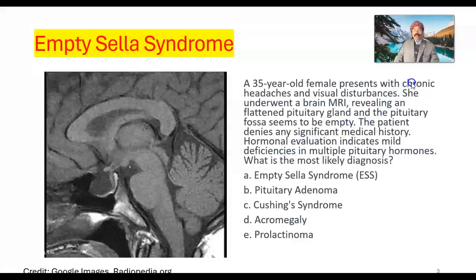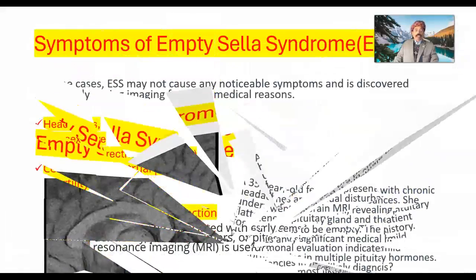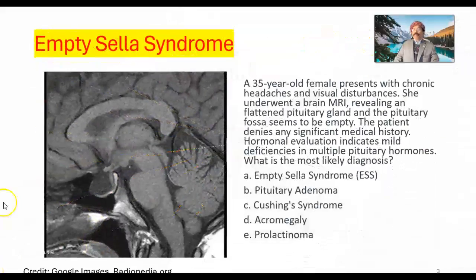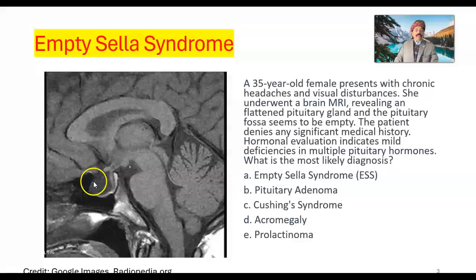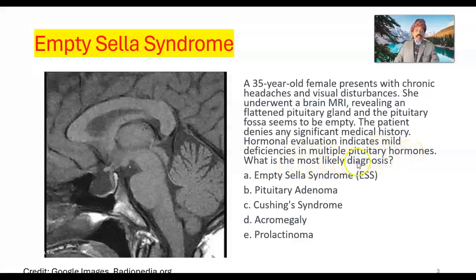A 35-year-old female presents with chronic headache and visual disturbance. She underwent a brain MRI revealing a flattened pituitary gland and the pituitary fossa appears empty. The patient denies any significant medical history. Hormonal evaluation indicates mild deficiencies in multiple pituitary hormones. What is the most likely diagnosis?